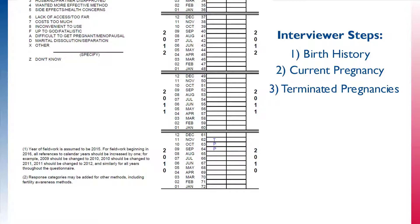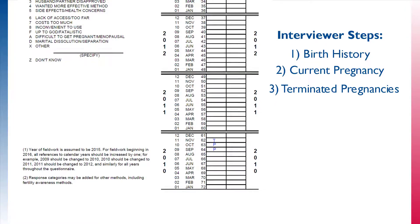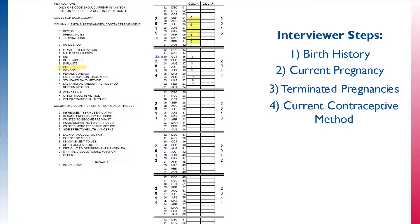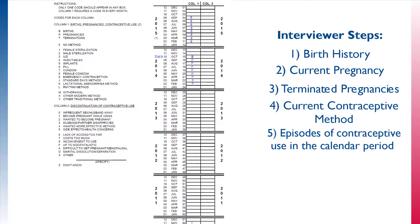Now that all of the births and pregnancies that occurred in the calendar period have been recorded, the interviewer will return to the calendar during the contraception section of the questionnaire. First, if the respondent is not currently pregnant, the interviewer will ascertain if the respondent is currently using a contraceptive method. The interviewer will fill in the code for the current method being used. In this example, the respondent has reported current use of the pill for the last eight months since February 2015. We know the number 6 corresponds to the pill because of the list on the left-hand side of the page. Now the interviewer will work through the rest of the calendar asking about all episodes of contraceptive use and non-use, beginning with most recent episodes.